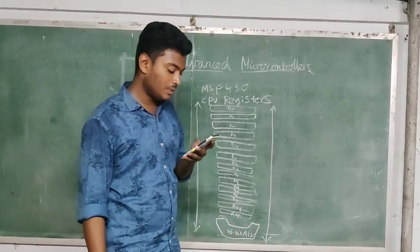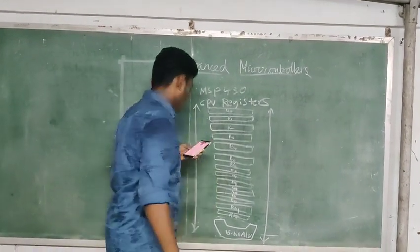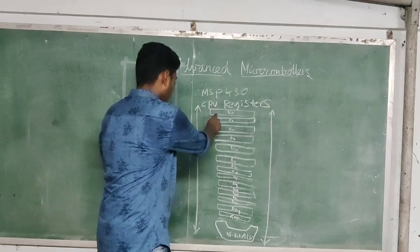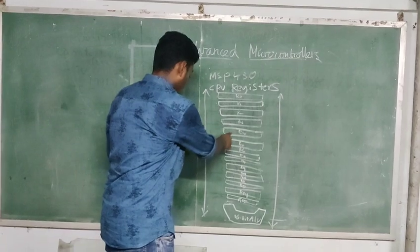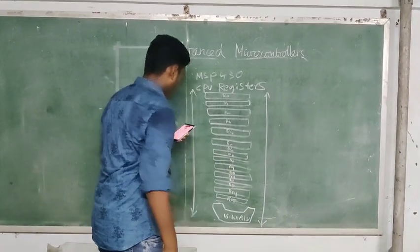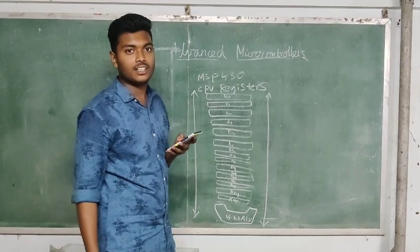The MSP430 CPU incorporates 16 registers R0 to R15. Registers R0, R1, R2, R3 have dedicated functions, whereas registers R4 to R15 are working registers for general use.